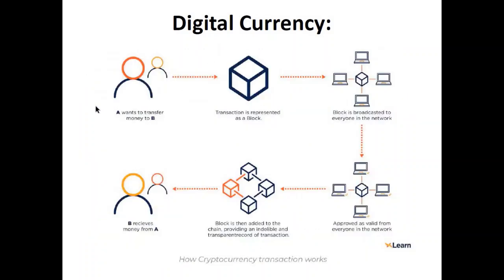Here is a diagram showing how blockchain works: A wants to transfer money to B, so the transaction is represented as a block, which is broadcasted to every member on the network for validation. Once validated, it is linked onto the previously existing blockchain, and B receives the money into their wallet. This process usually takes around 15 to 30 minutes because cryptocurrency transactions are heavily encrypted and their validation requires a lot of resources from the network.